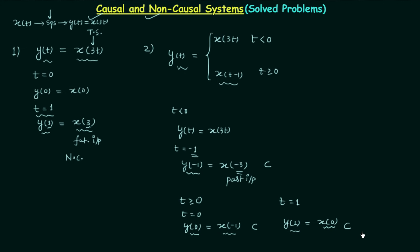In all the cases we have seen that the system is causal in nature, therefore the answer is causal. We substituted different values of time, similar to the first problem. For the same relationship x(3t), in problem 1 we got non-causal, but here when t is less than 0, the relationship is the same yet the system is causal.